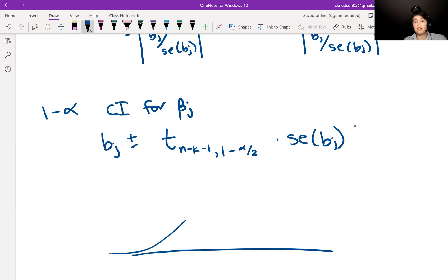We get that quantile for the T distribution. Here's our T distribution with N minus K minus one degrees of freedom. We put one minus alpha in the middle, centered at zero, and then we're looking for this cutoff here.